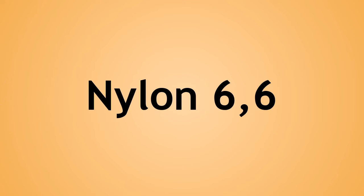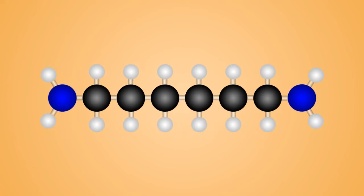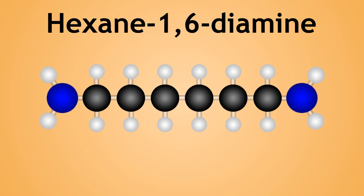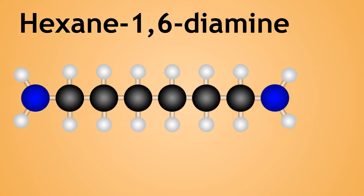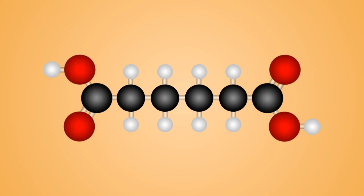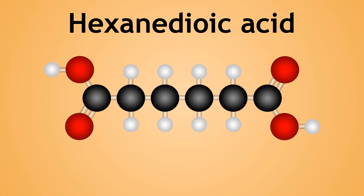In the formation of nylon-6-6, we react a molecule with an amine group on each side, known as hexane-1,6-diamine, and a molecule with a carboxylic acid at each end, hexane-dioic acid.